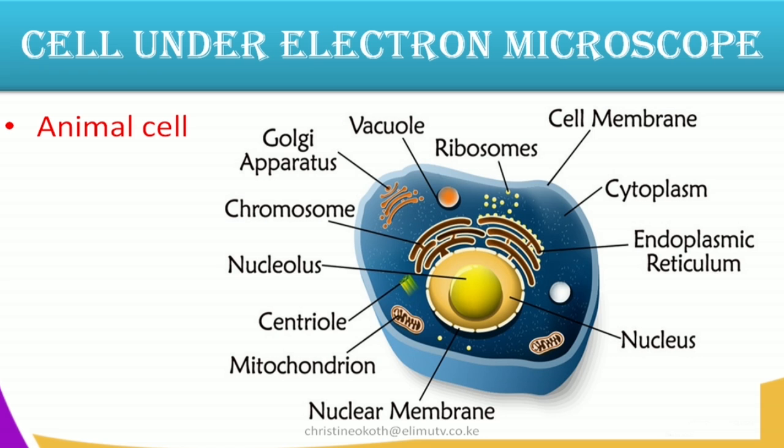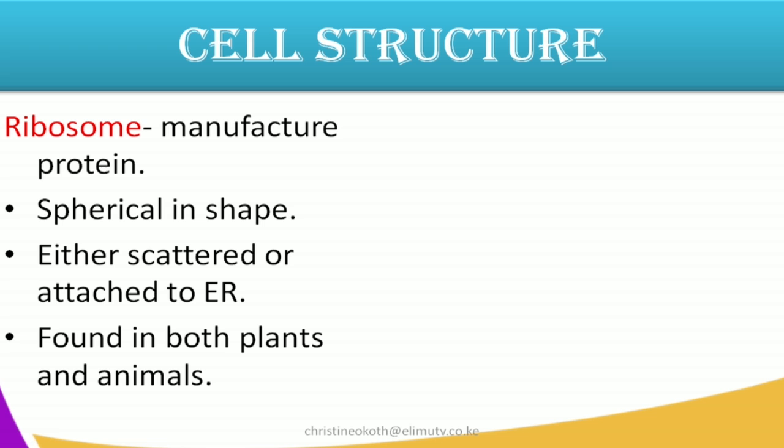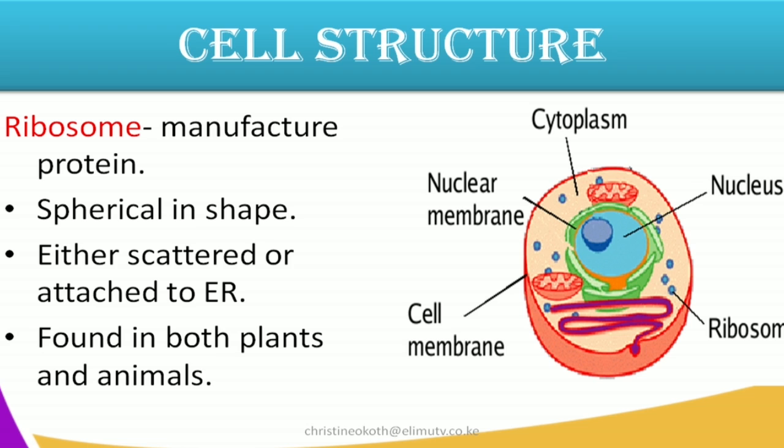Let us look at the functions of these features which you see when you are using an electron microscope. The first additional structure we have is the ribosome. Ribosomes are spherical in shape and their main function is to manufacture or synthesize the protein in the cell. They are either scattered or attached to the endoplasmic reticulum, and they are found both in plant and animal cells.